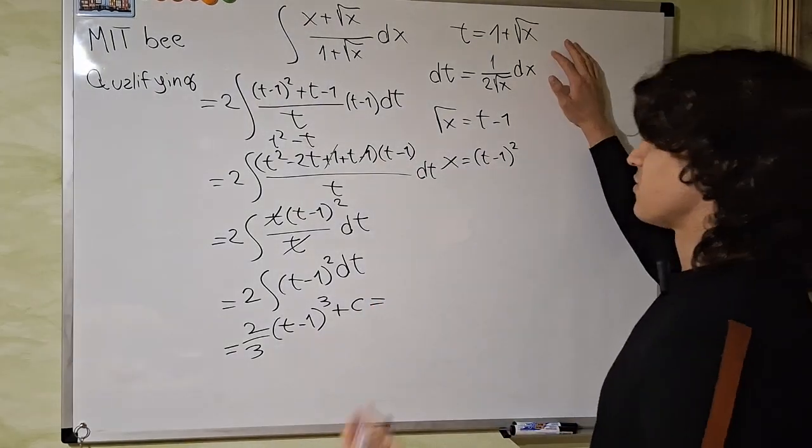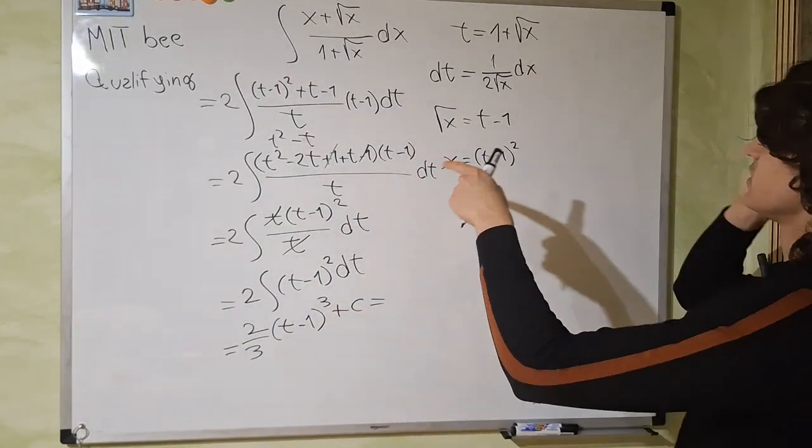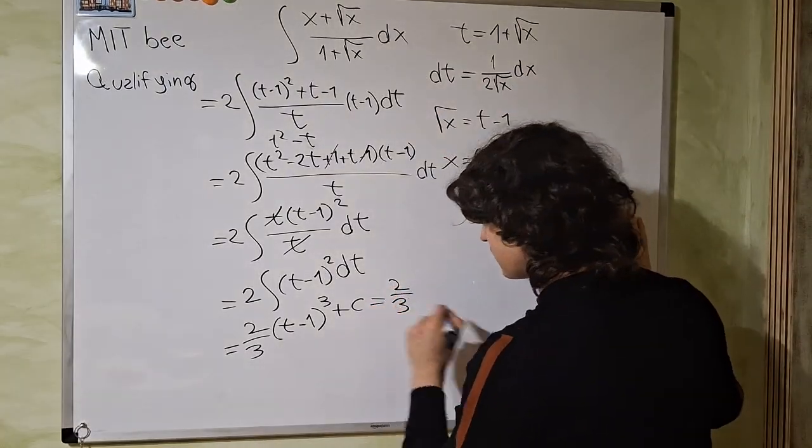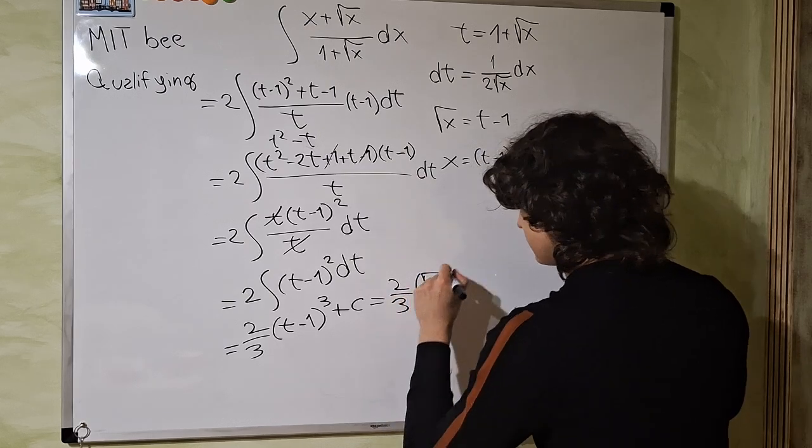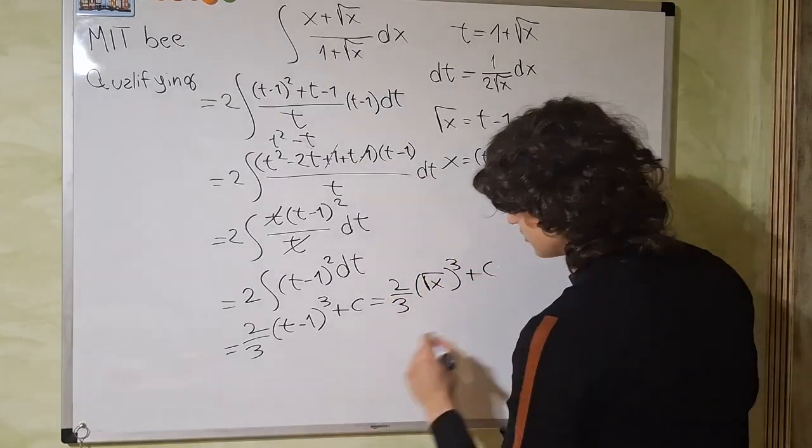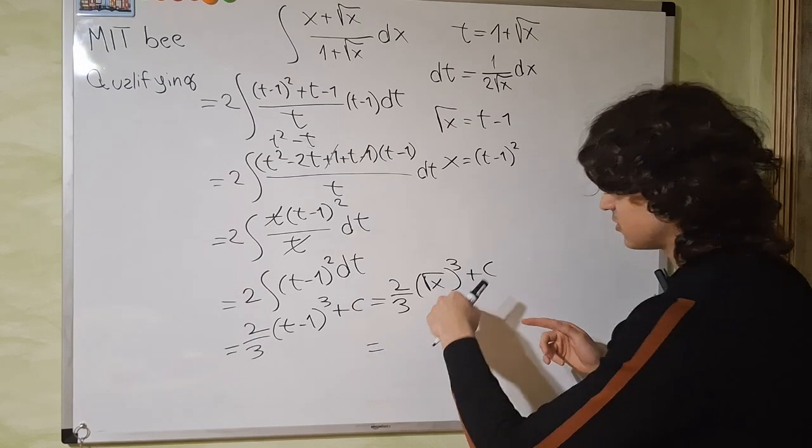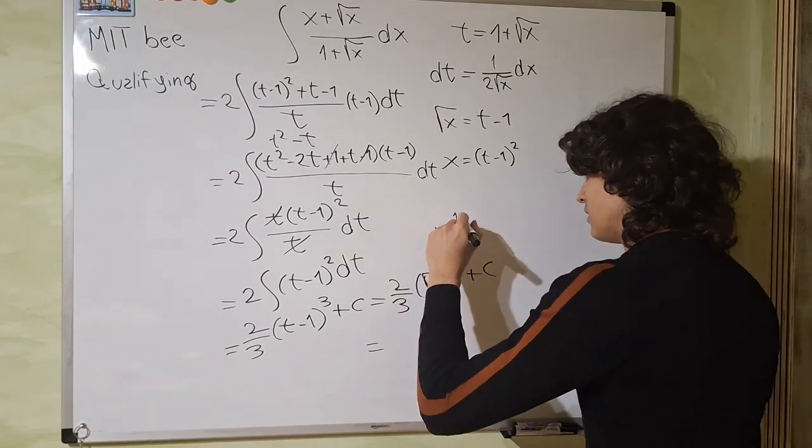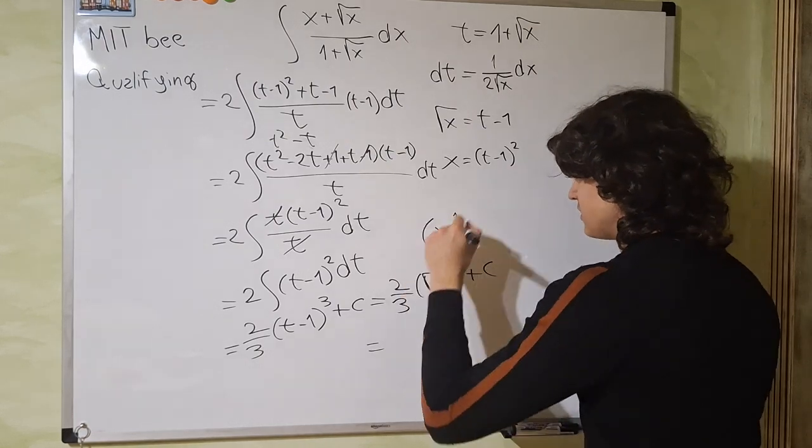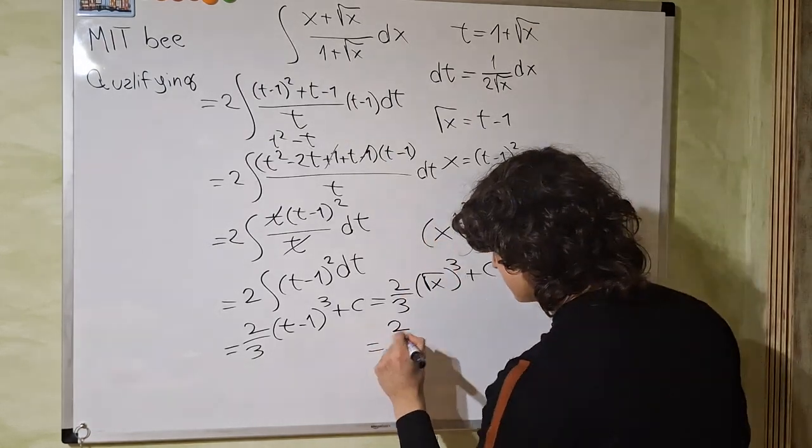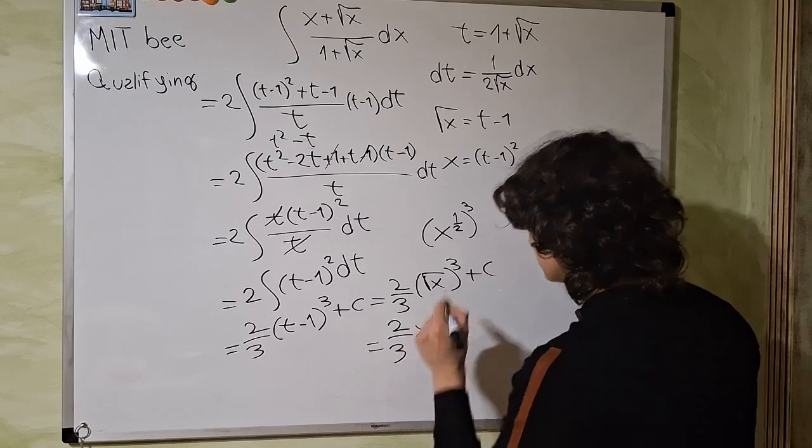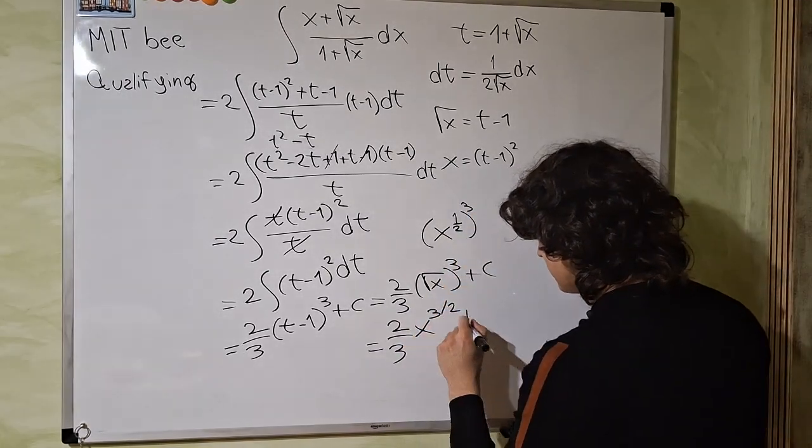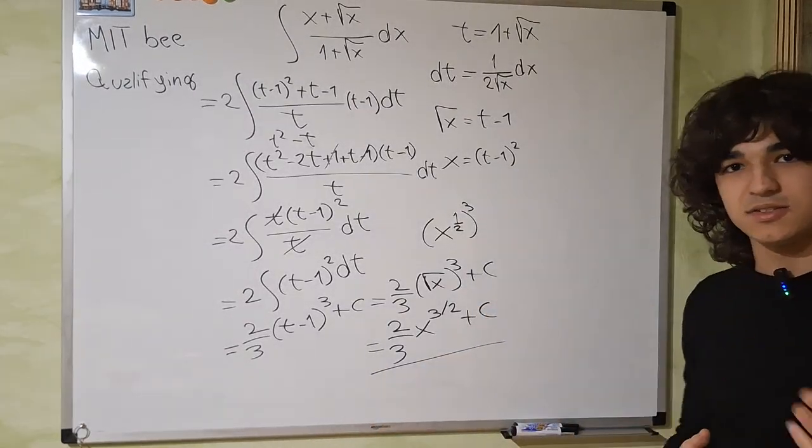But t minus 1, we have to get back to the x world. So t minus 1 is the square root of x. So this is 2 thirds square root of x to the third power plus the integration constant. But square root of x is x to the 1 halves. And all of this is to the third power. So we just multiply the exponents. This is 2 thirds x to the 3 over 2 plus c. And this is the answer to the integral.